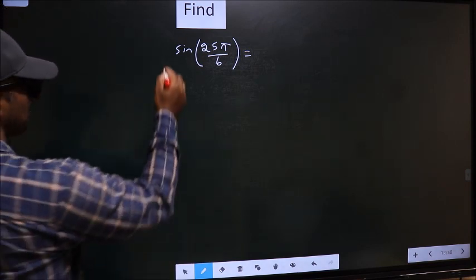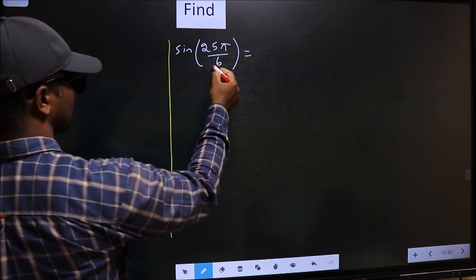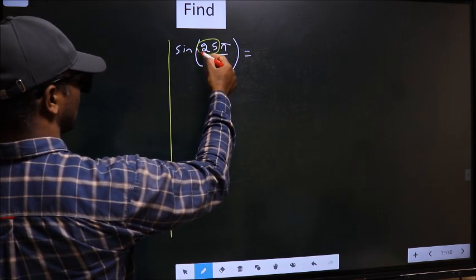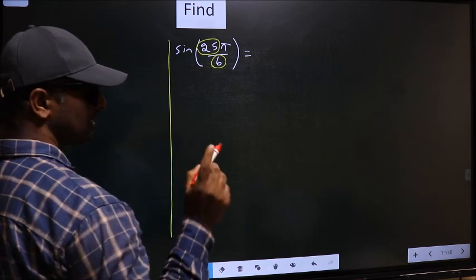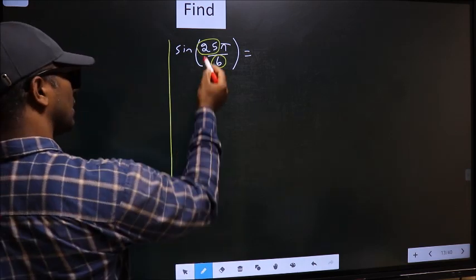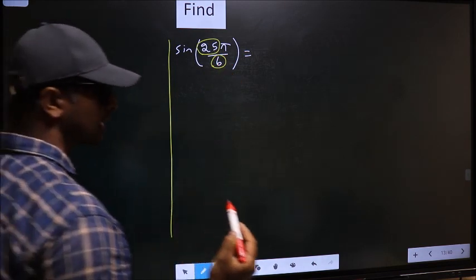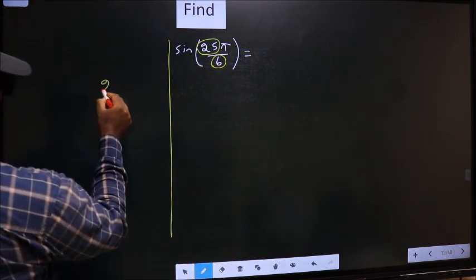See, here we have 6 and here 25. Now you should look, 25 is close to which multiple of 6?